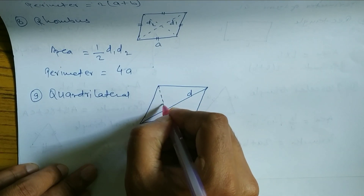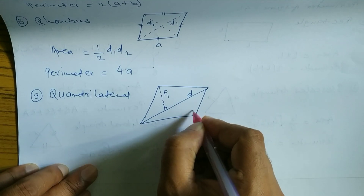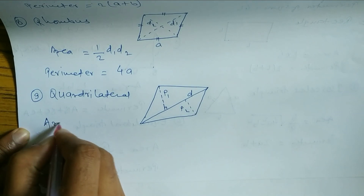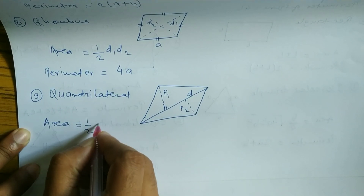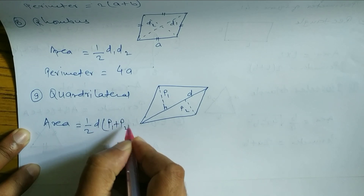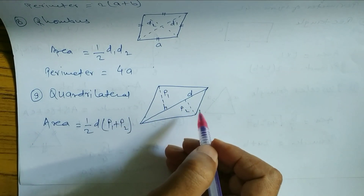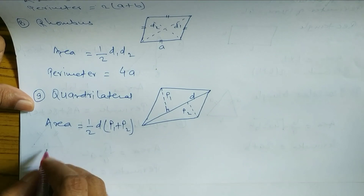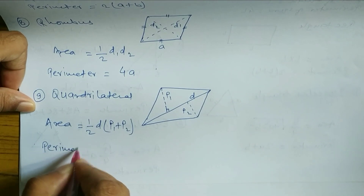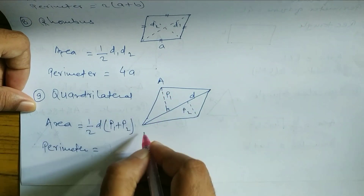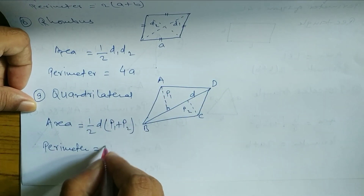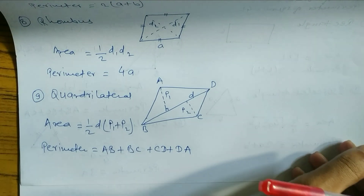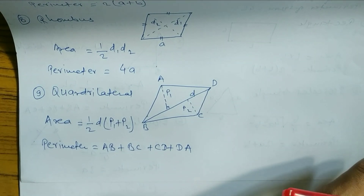Number 9 is the quadrilateral. This one is the diagonal — d. This is perpendicular one — p1 — and this is perpendicular two — p2. Area formula of a quadrilateral is (1/2) × d × (p1 + p2), where d means diagonal and p1, p2 mean perpendicular lines. Perimeter is the sum of all sides: ab + bc + cd + da.